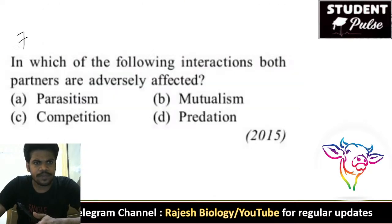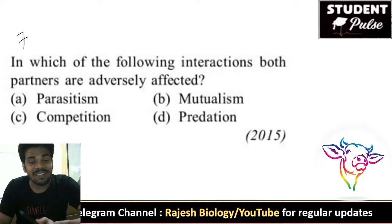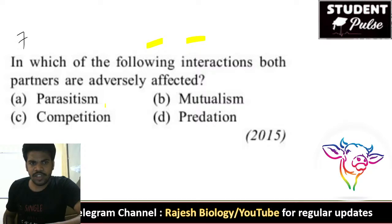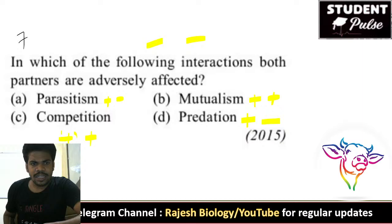In which of the following interactions are both partners adversely affected — both are negative? In parasitism one is plus and the other is negative. In mutualism both are plus. In predation the predator gets benefited but the prey gets a negative. But in competition both species get adversely affected — minus and minus. So the right answer is competition.